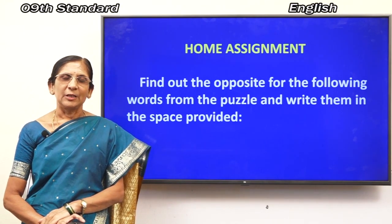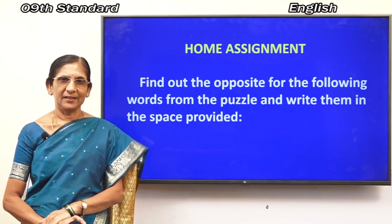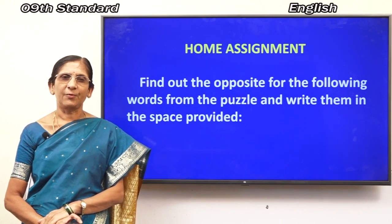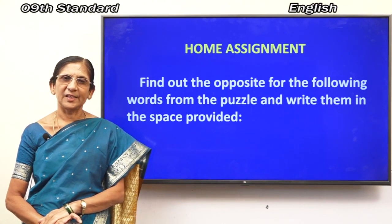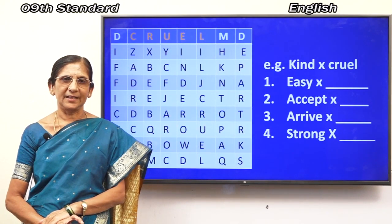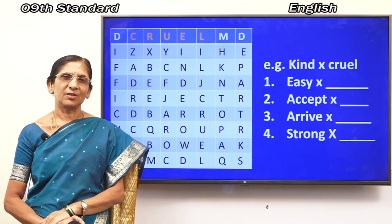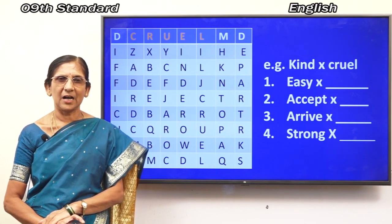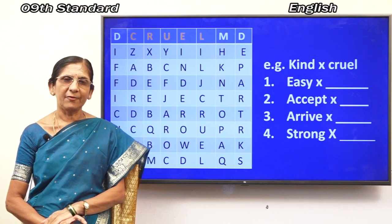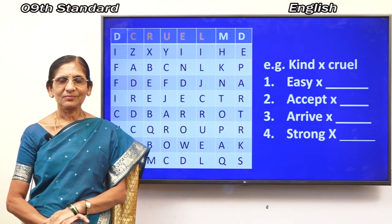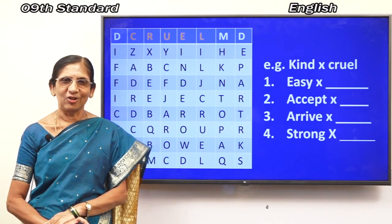Now for your home assignment: find the opposites for the following words from the puzzle and write them in the space provided. One example is done for you — 'kind,' opposite is 'cruel' — you can see the word C-R-U-E-L in the puzzle. Identify the antonyms for the remaining words. I will check your homework tomorrow in the next class. Are you happy? Have you understood the lesson? Very good — thank you, students.